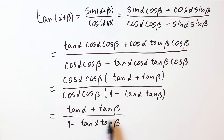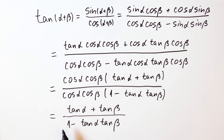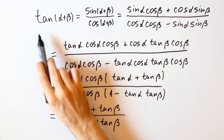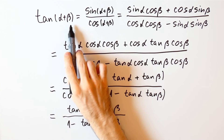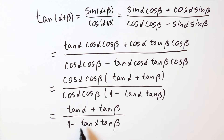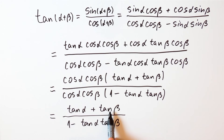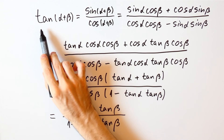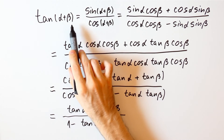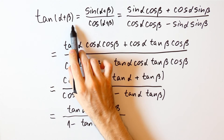But why is it so important to check that everything is defined? We can have the situation where something isn't defined in this formula, but the tangent of alpha plus beta is still defined. For instance, if both alpha and beta are equal to 90 degrees, then neither the tangent of alpha nor the tangent of beta are defined, but the tangent of alpha plus beta is defined and in that case will be equal to 0.